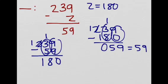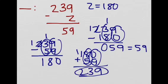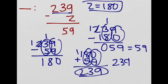Another way we could have checked is doing 180 plus 59. And this would be using the fact of inverses. So we have 9 here, we have a 13 here, 239. So either way we get 239 for the final answer. So z must be 180.